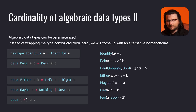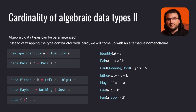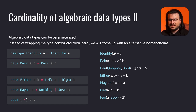The interesting part comes when we remind ourselves that data types can be parameterized. Instead of wrapping the type constructor with card, we will come up with an alternative nomenclature. Consider the identity type — it accepts a type parameter, say a. Its cardinality depends on that type parameter, since it appears to the right of the equals sign, specifically in its only data constructor, identity, that accepts a term of that type. So in this case, the cardinality acts like a function that accepts the type parameters and returns some mathematical expression.